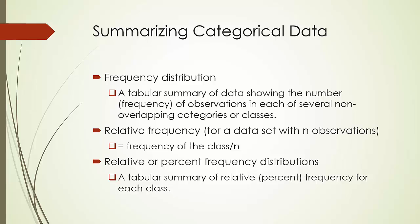The textbook defines percent frequency as relative frequency multiplied by 100. I am not a big fan of that. In reality, people use relative and percent frequency interchangeably. It is totally fine to say that the relative frequencies of male and female in the graduating class are 40% and 60% respectively. So, relative or percent frequency distribution is simply a tabular summary of relative or percent frequency for each class.